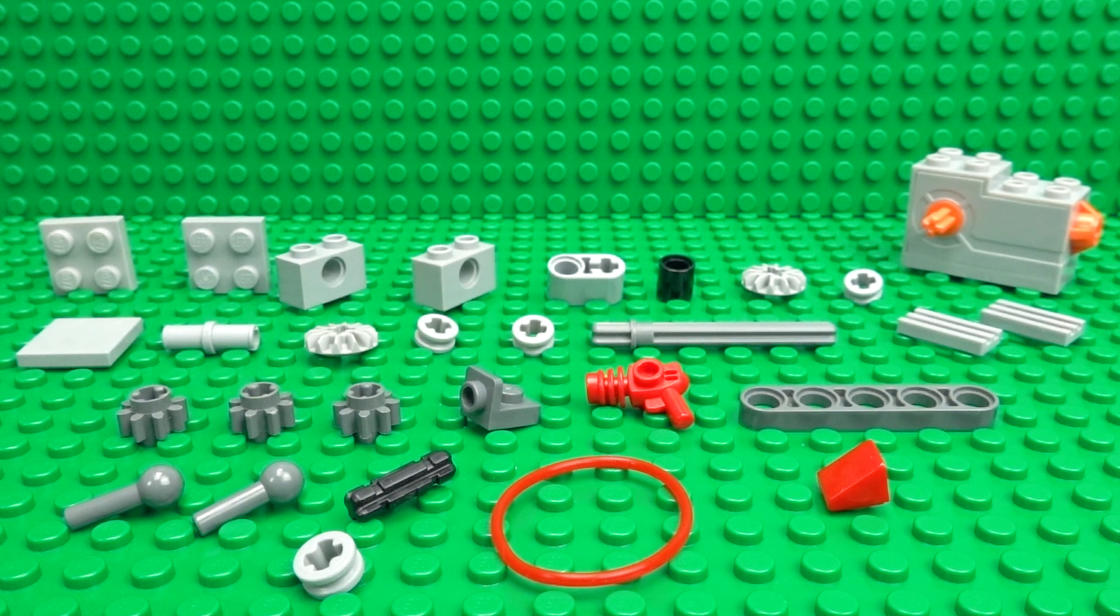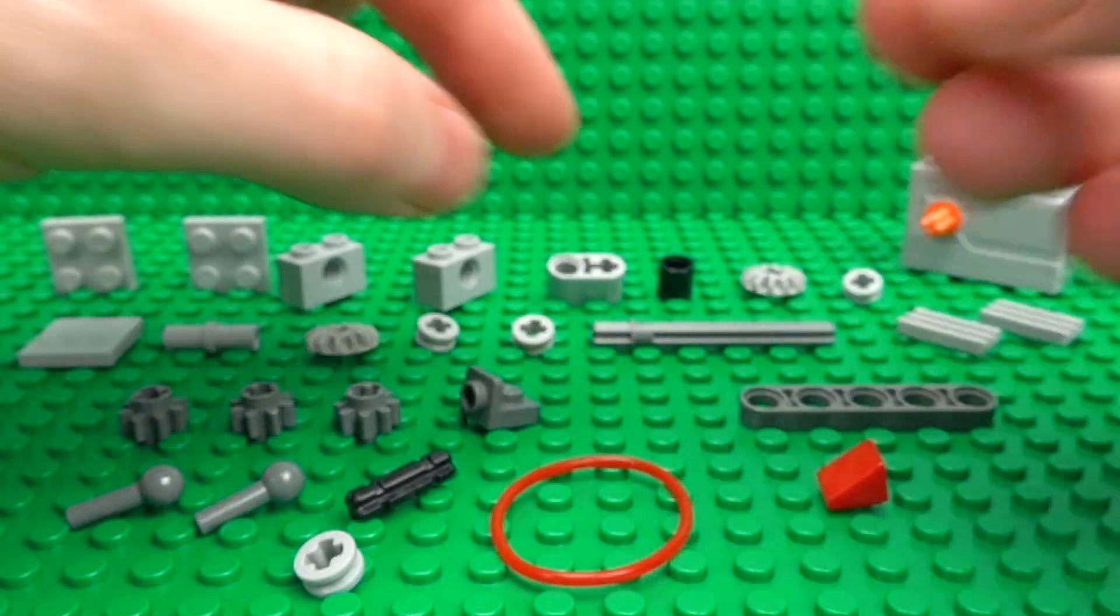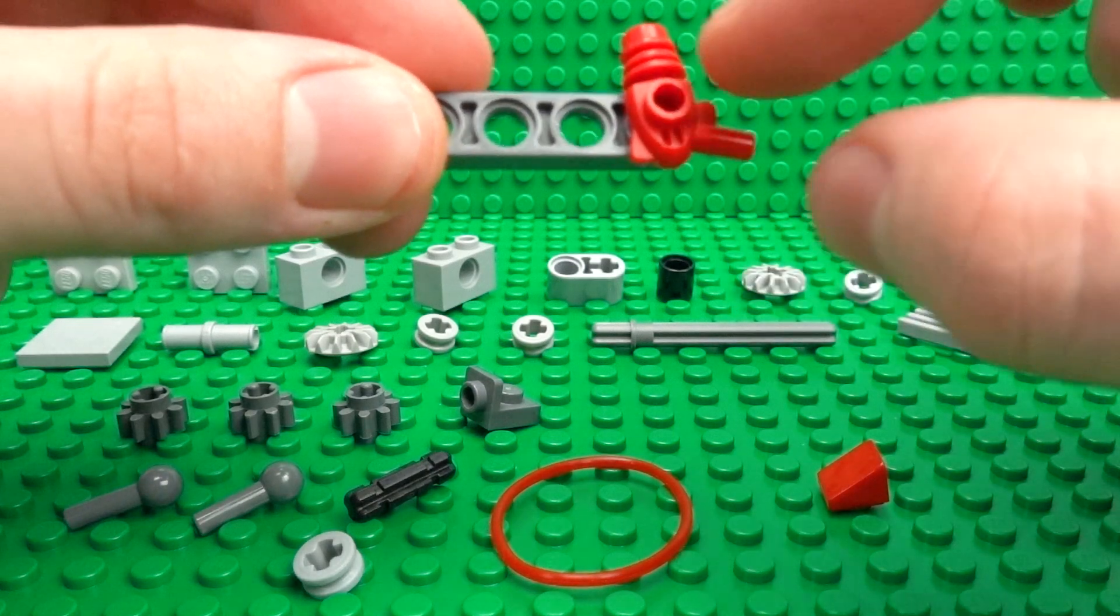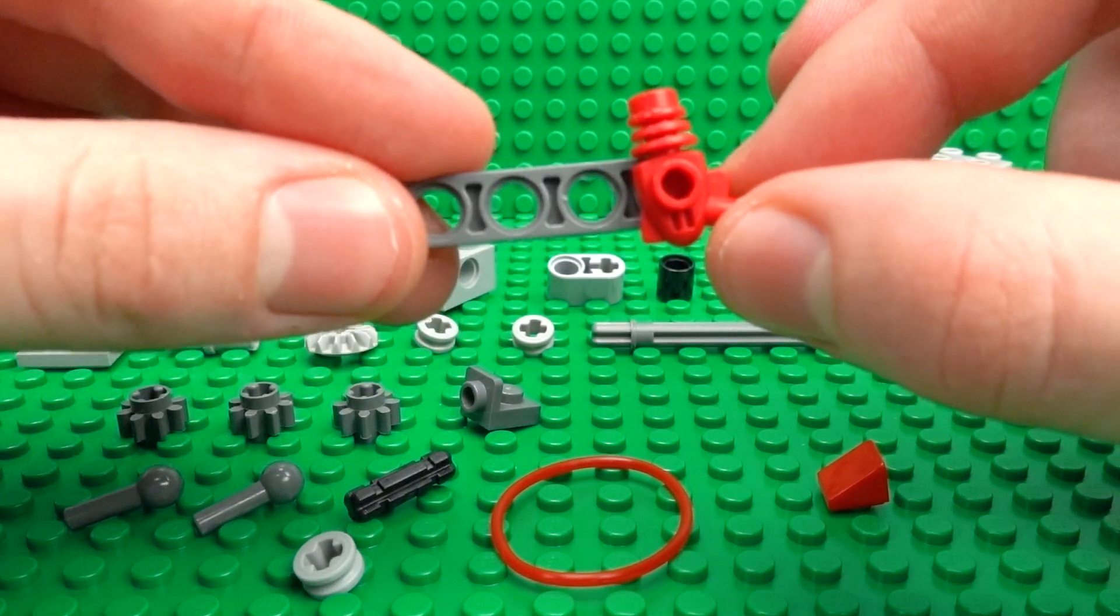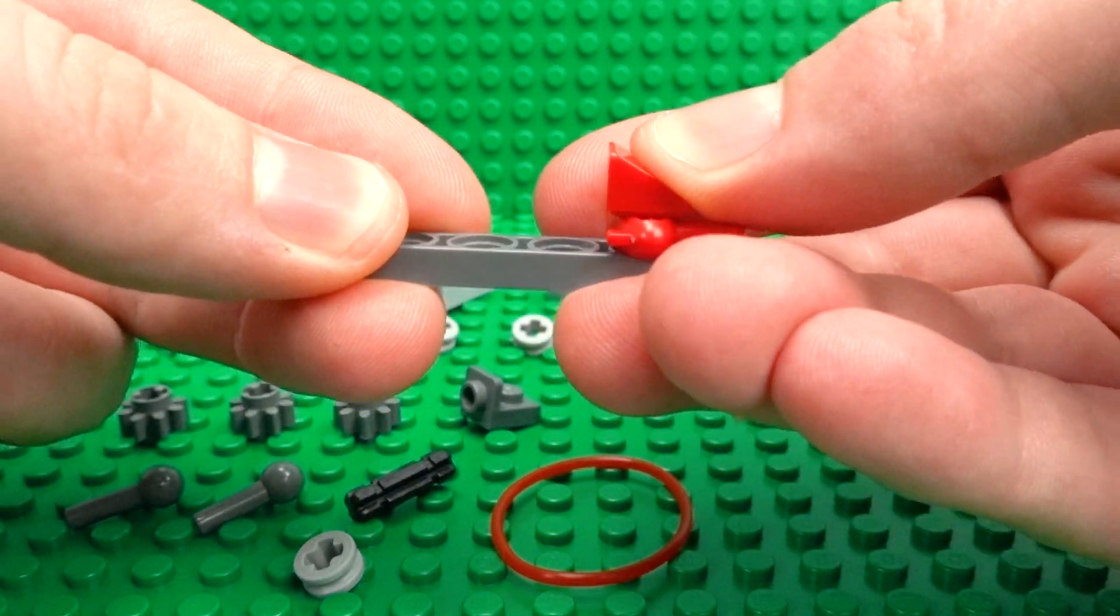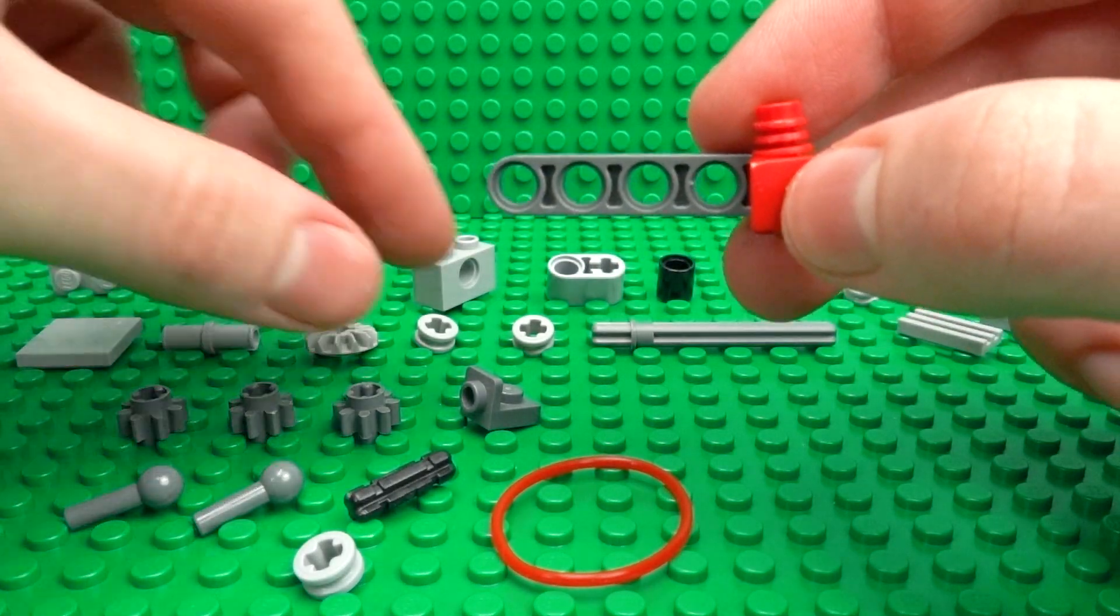So first we'll build the chainsaw itself, and this will use this space gun combined with a 1x5 half Technic lift arm. So just clip the gun on its side like that, and you can also attach a cheese wedge or 1x1 slope facing this direction for some extra sloping. And this is the part that would contain the motor in real life, but it's just decorative in our Lego version.